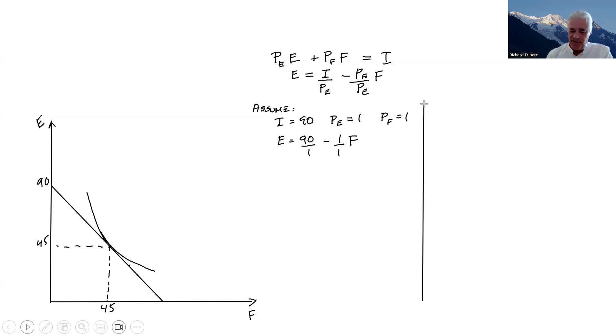So now comes the little thing that's sort of new here in some sense. What are we saying here? What we're saying is when the price of food was 1, this individual consumed 45 units of food. So another way of saying that would be, well, we have one point on a demand curve.